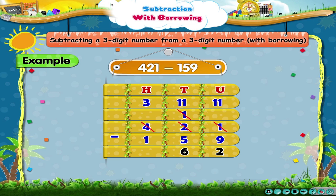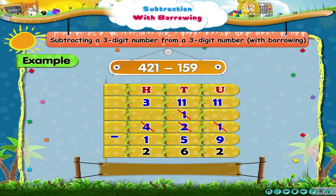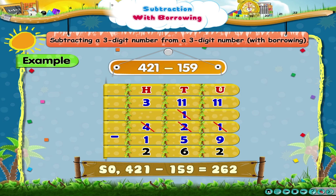Since the digit 4 in the hundreds place is reduced by 1, it becomes 3. Now, 3 hundreds minus 1 hundred equals 2 hundreds. So, the difference is 262.